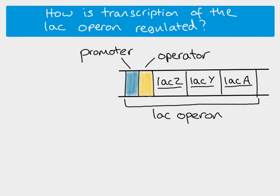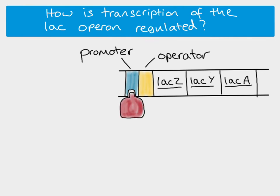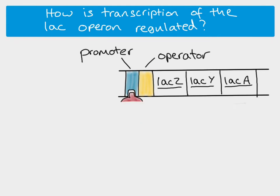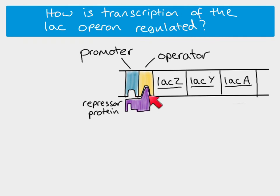Let's think about how the transcription of this operon is regulated — how it is turned on and off. The promoter is a region where RNA polymerase will bind, and when it binds to the promoter, transcription will occur. We also have our operator, which is our switch — this is where the repressor protein can bind. When the repressor protein is bound to the operator, that's like turning the switch off and it means transcription cannot happen.